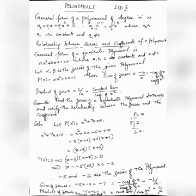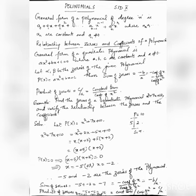Let us see how we can find out the relationship between the zeros and coefficients of a polynomial. For that, we are going to deal with a quadratic polynomial. As we know, the general form of a quadratic polynomial is ax² + bx + c = 0, where a, b, c are constants and a should not be 0.